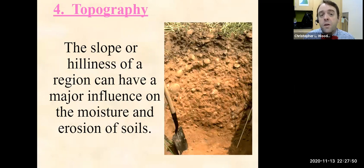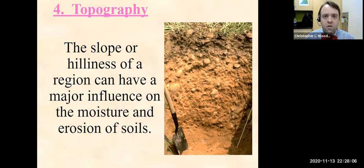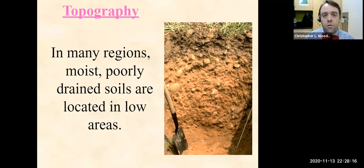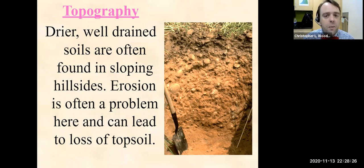The next factor is topography. The slope or hilliness of a region can have a huge influence on soil, including moisture and erosion rates. Think about a hilly region where water is mostly going to drain out and away versus a flat region that holds moisture. Moist, poorly drained soils are located in low-lying areas, whereas in higher areas, water just drains away. Erosion is a real big problem because it can lead to loss of topsoil, and the soil then loses its ability to sustain life.